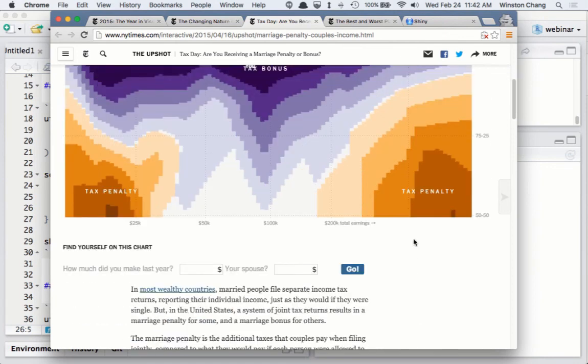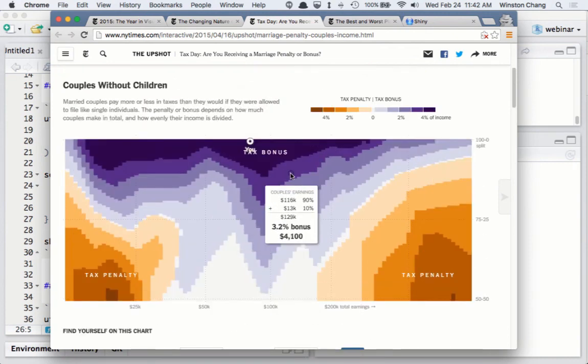So this graphic has some basic interactive features. You can hover over it and it'll tell you some information. So if you want to find out, I'm a couple, one person makes this much money and the other person makes this other amount of money, you can get some detailed information about how much of a bonus or penalty you're paying in taxes.